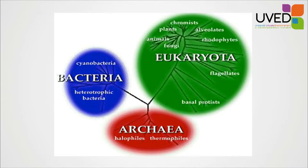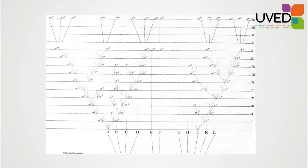The further apart the lineages are on the horizontal axis, the more different they are ecologically speaking. So what happens here is not the same as what happens in a conventional phylogeny, where various forms of living beings are placed arbitrarily based on their history and not based on their ecology.